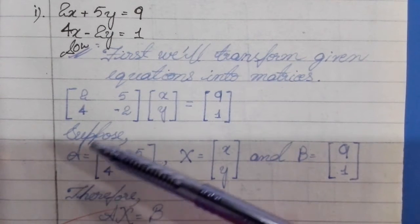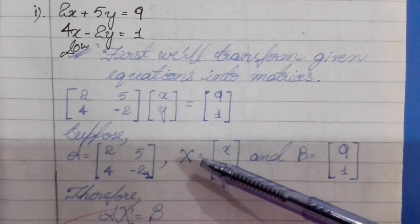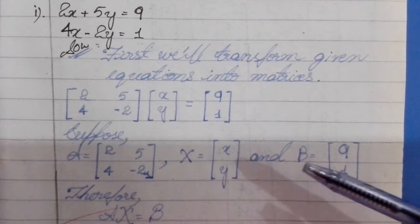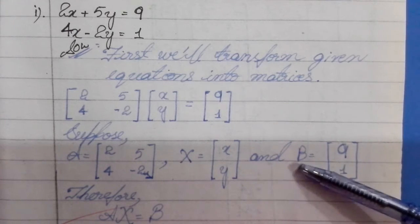Then, we will have A equal to the coefficient matrix, X equal to the variable matrix, and B equal to the constant matrix.